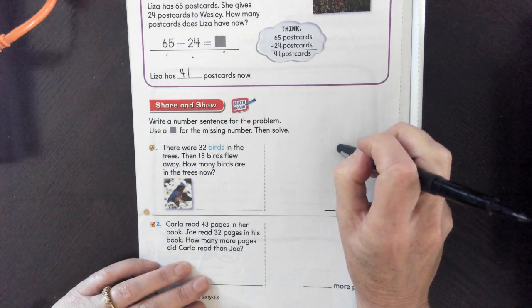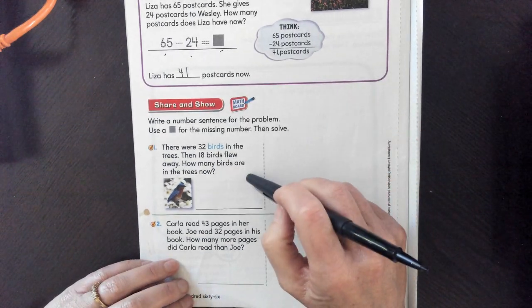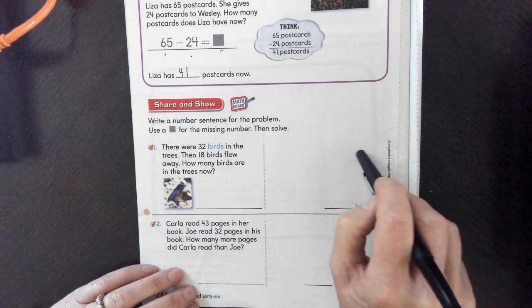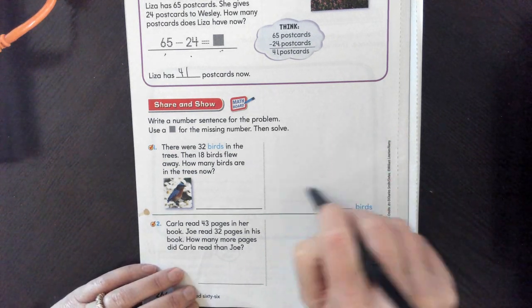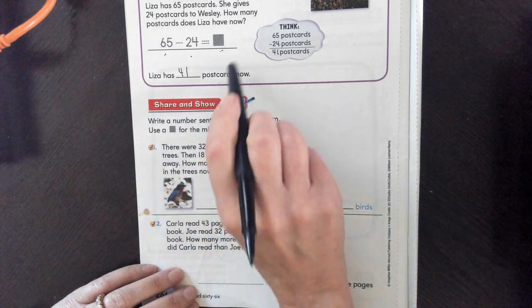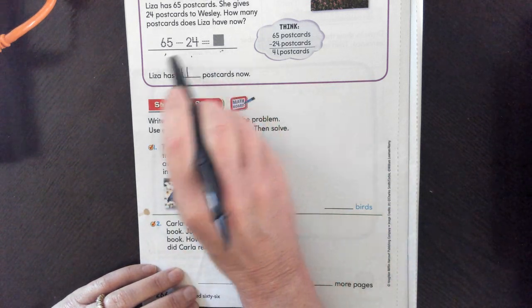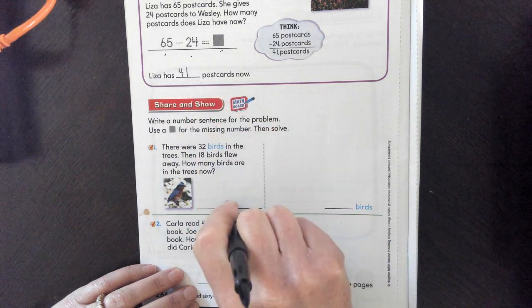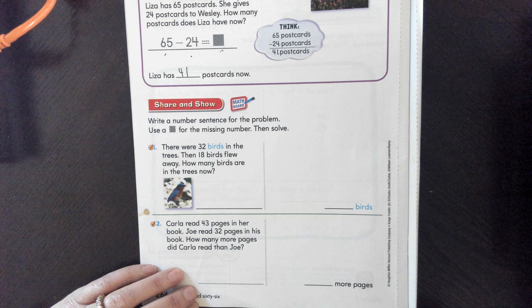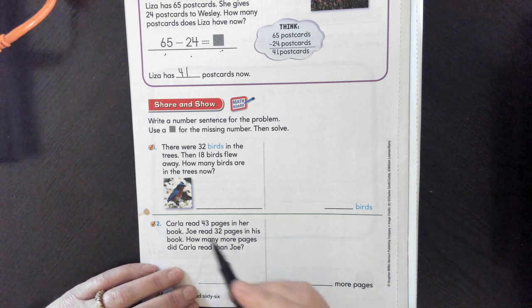So number 1. There were 32 birds in the trees. Then 18 flew away. How many birds are in the trees now? Figure it out. Write a number sentence. Use a box for a missing number. It might be there. It might be here. It might be here. You figure it out. Pause. Did you resume? Let's try.